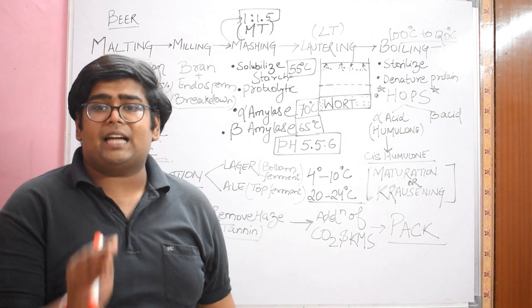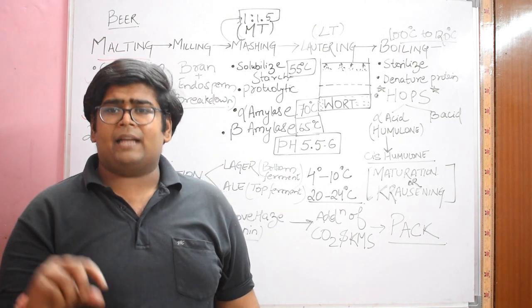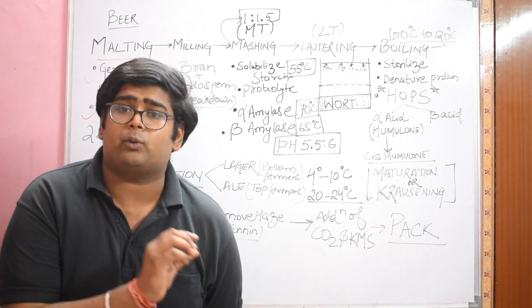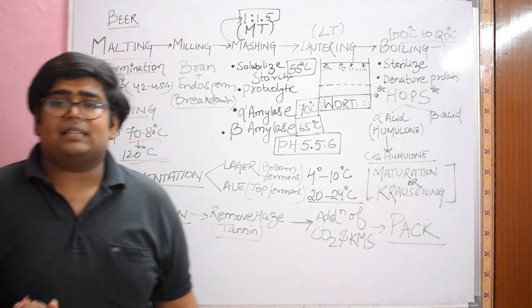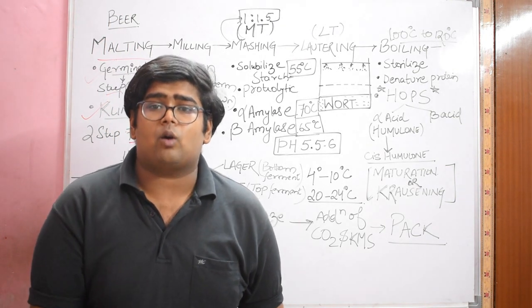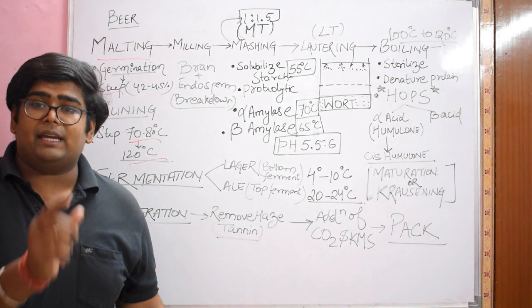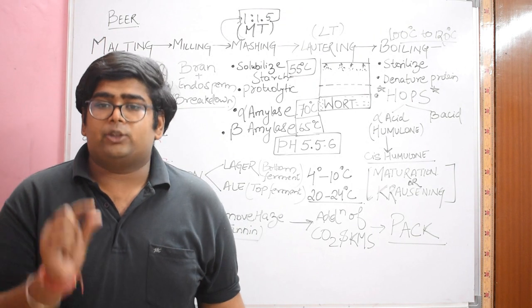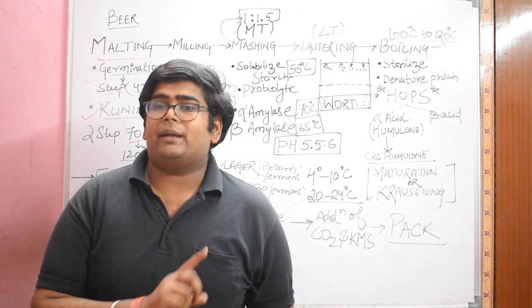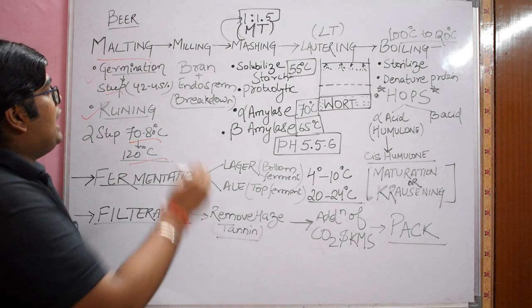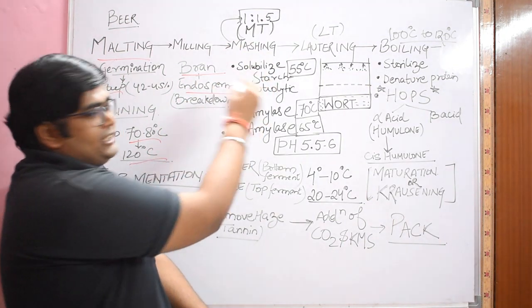During milling, if your bran is broken into smaller pieces, it will add bitterness to the beer. This bitterness from tannins in the bran is different from the real bitterness of beer, which comes from hops. We don't want tannins in our beer.